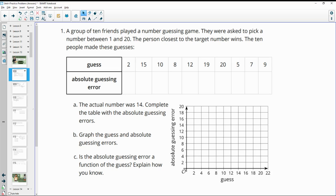Number one, a group of 10 friends played a number guessing game. They were asked to pick numbers between 1 and 20. The person closest to the target number wins. The 10 people made these guesses.